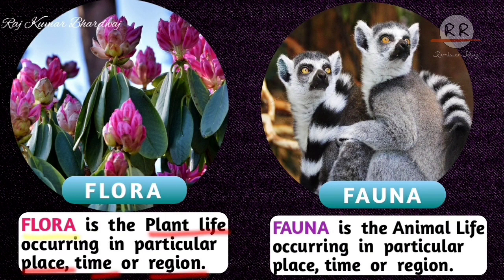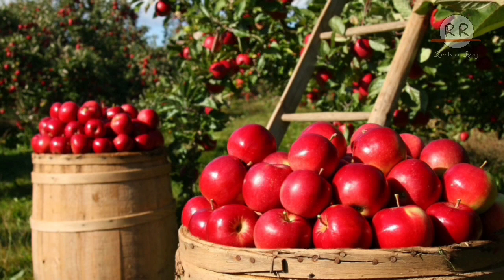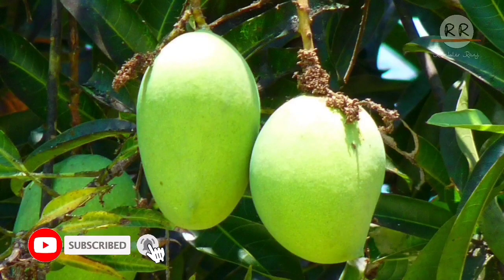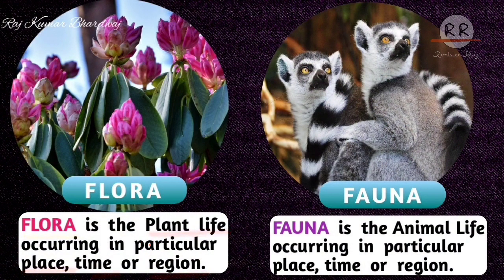The natural habitat of the flora is important. For example, apple trees grow in certain regions, and mango trees grow in their particular natural habitat. Each plant also has a particular time associated with it.